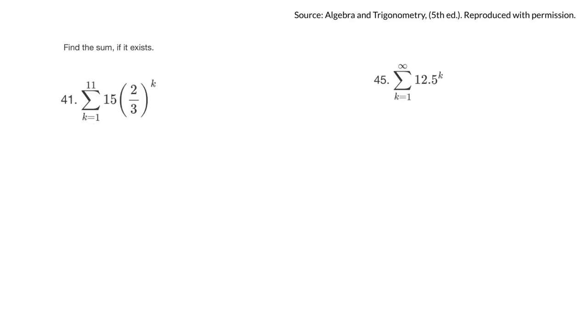For these geometric sequences, you're asked to find the sum if it exists. So for question 41, this says add things up. This tells you that this is a general term, and it generates all the terms for you.